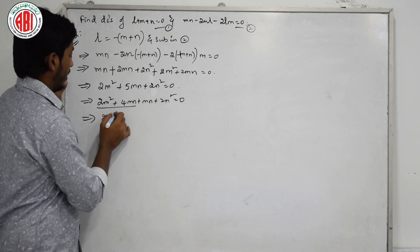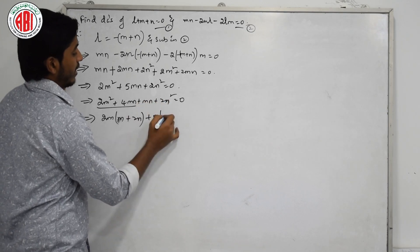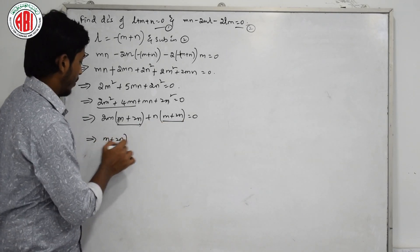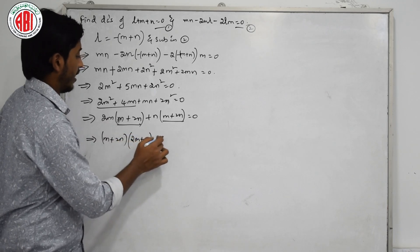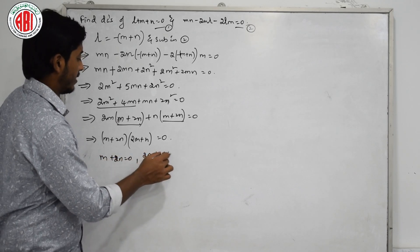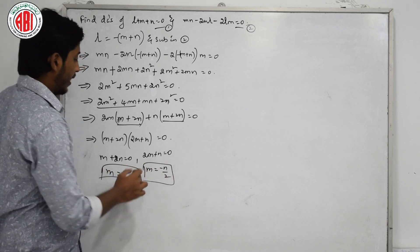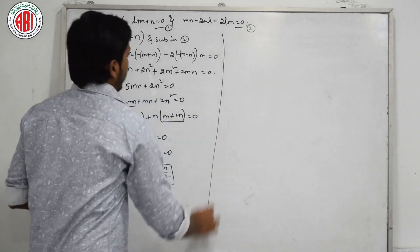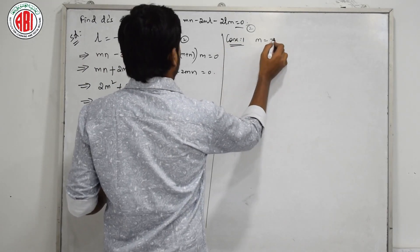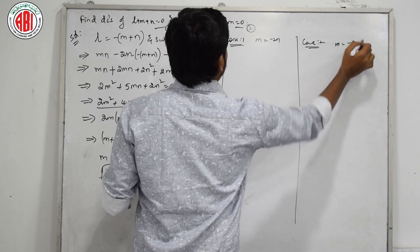If I take 2M common I get (M plus 2N). If I take N as common I also get (M plus 2N). Taking (M plus 2N) as common, we get (2M plus N) equal to 0. Therefore either M plus 2N equals 0 or 2M plus N equals 0. So M equals minus 2N in the first case, and M equals minus N by 2 in the second case — giving us two cases, just like the last problem.